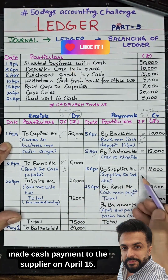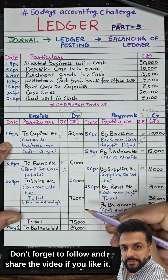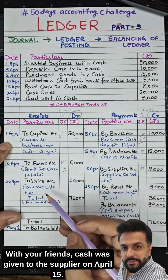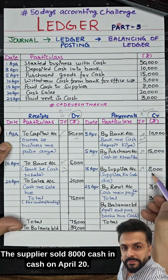On April 15th, a cash payment was made to the supplier. Cash was given to the supplier, so this is recorded as a cash outflow on the credit side.